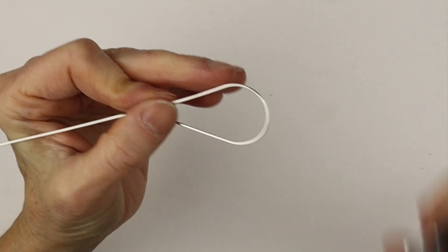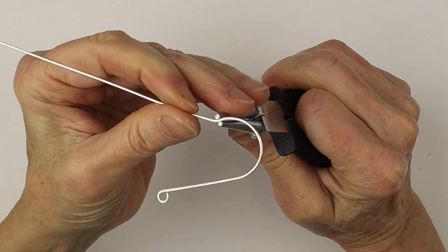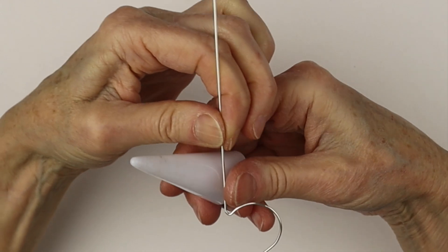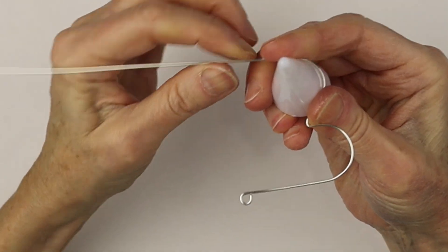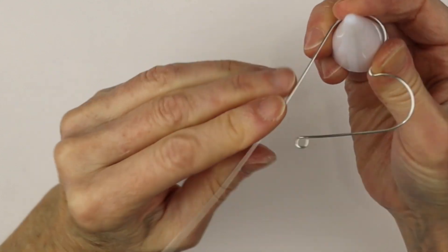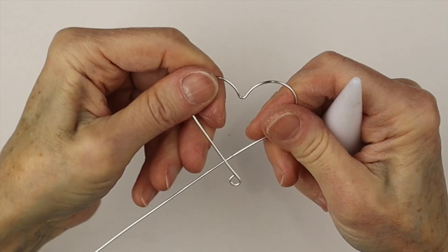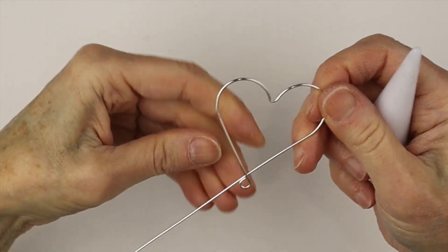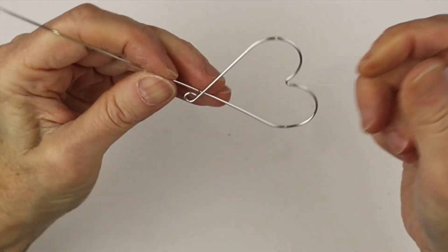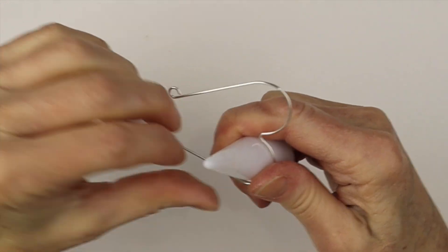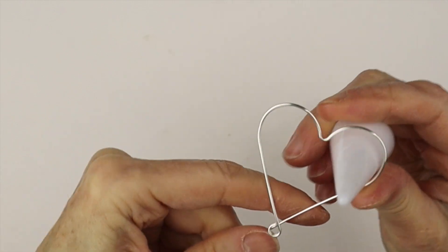So we're going to curve it around and then take our round pliers and bend it back up. After that we'll take the ring cone again and curve the wire around to form the top of the heart. Just bring it around, adjust it so it's even, wiggle it around a little bit. You can always adjust the curves if you need to make it more symmetrical.